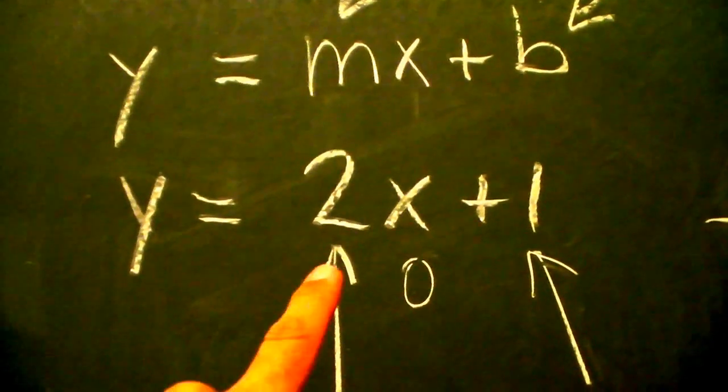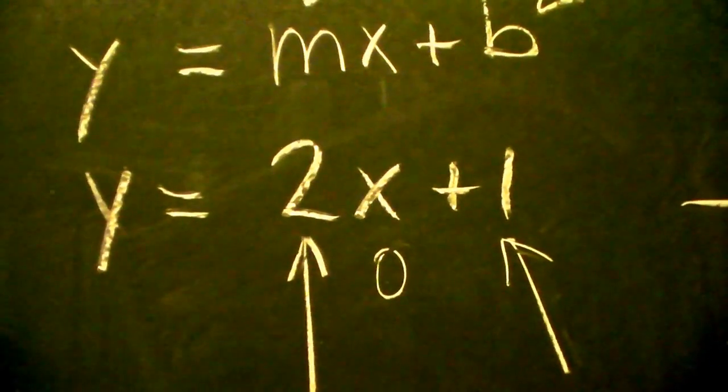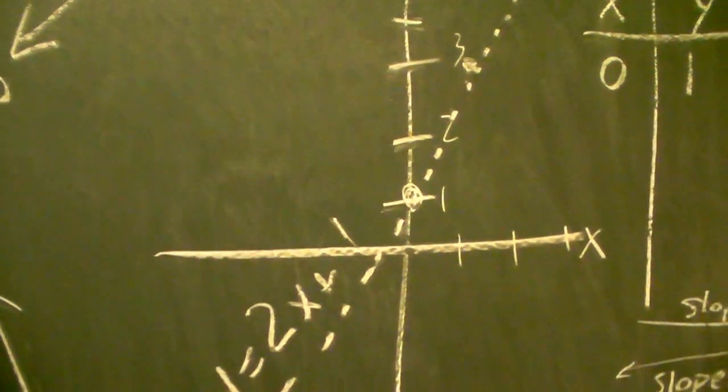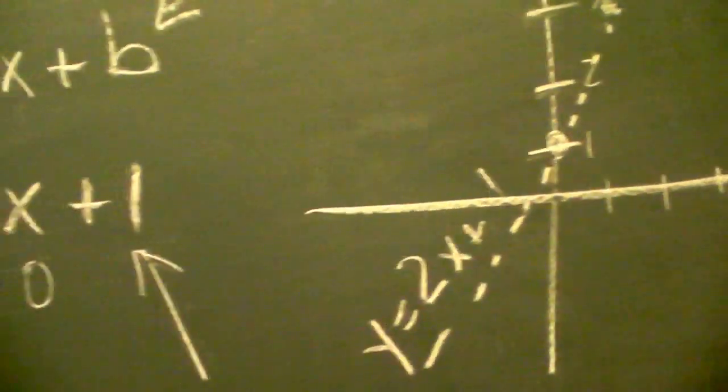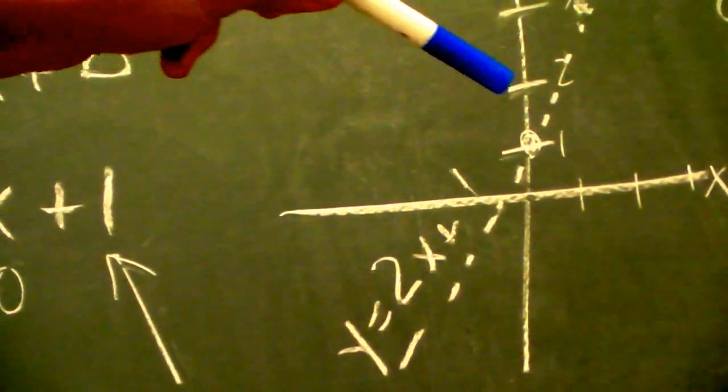So if we have y = 2x plus 1, we're pretty sure that it's crossing at 1. See, that 1 is going to pop up there.